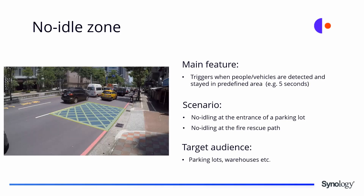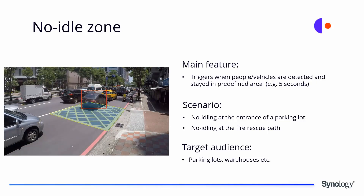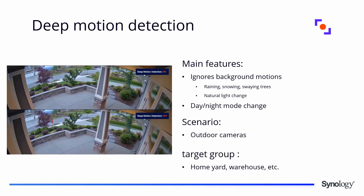The No Idle Zone feature triggers when people or vehicles are detected lingering in a predefined area. For example, a vehicle blocking a pathway for more than five seconds will trigger an alert in Surveillance Station. This is ideal for preventing idling at parking lot entrances or fire rescue paths, with target audiences such as parking lots and warehouses. Deep motion detection ignores background motions such as rain, snow, swaying trees, and natural or day-to-night light changes — useful for outdoor cameras in home yards or warehouses.